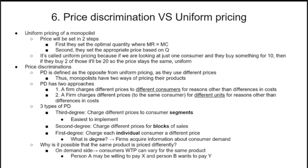There are three types of price discrimination. Third degree charges different prices to consumer segments — it's the easiest to implement, focusing on the segment. Second degree charges different prices for blocks of sales — for example, buy 10 and get 15 for a discounted price, like buy-one-get-one 50% off. It requires purchasing a block; buying just one unit doesn't get the discount. First degree charges each individual consumer a different price, and this is the hardest to implement.